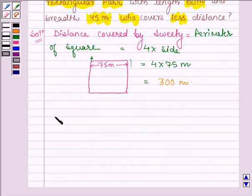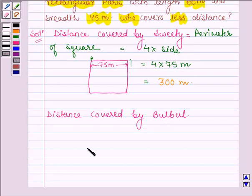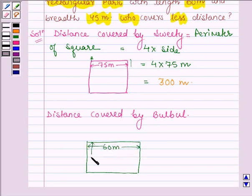Now, let us find the distance covered by Bulbul. Now, Bulbul runs around a rectangular park of length 60 meters and breadth 45 meters.